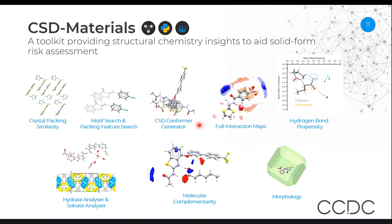We have a conformer generator. This uses statistics from the CSD in order to generate realistic-looking molecules. This is very useful if you only have a two-dimensional structure and you would like to see what a likely three-dimensional arrangement might be.